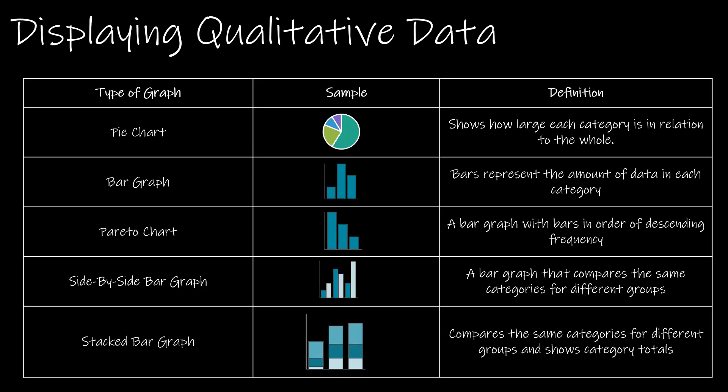We'll start section 2.2 by taking a look at how to display qualitative data. There are five ways we will talk about: pie chart, bar chart, Pareto chart, side-by-side bar graph, and stacked bar graph. The side-by-side and stacked have to do with two or more distributions, as opposed to the others which display just one distribution at a time.